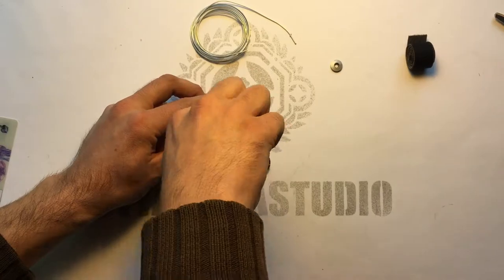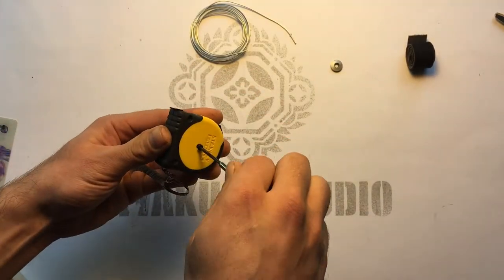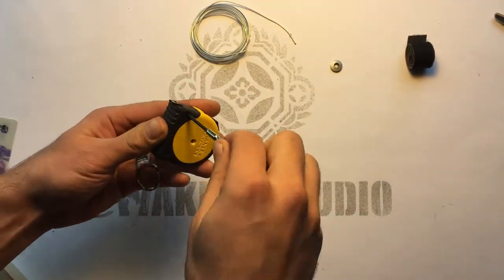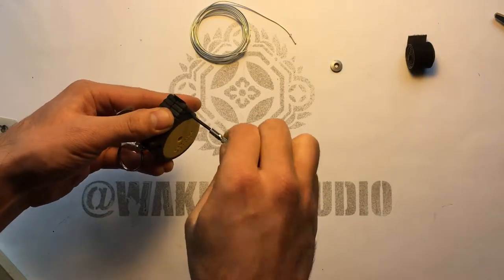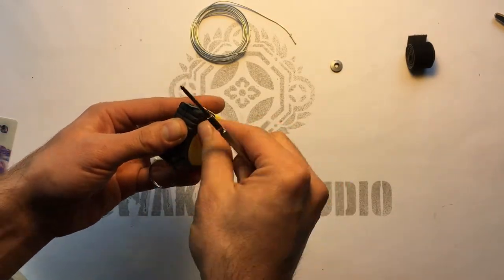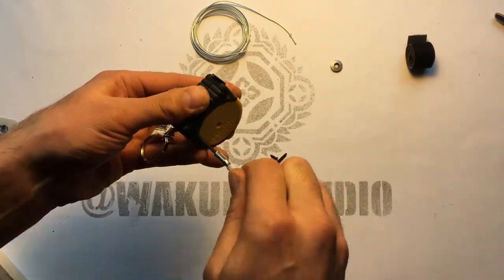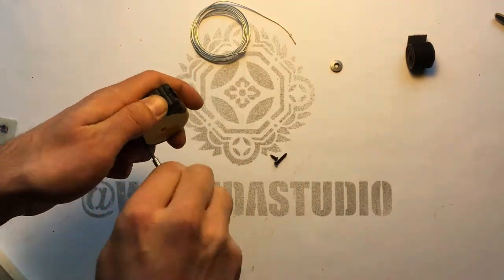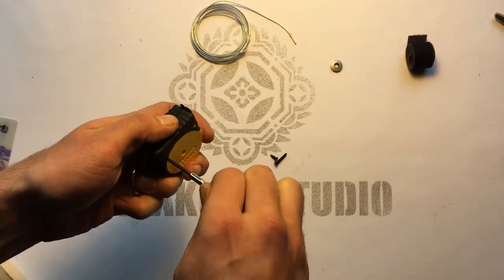Now we'll take out all of the screws from the back of the tape measure. You'll actually notice that because we'll be drilling through the exact center, the center screw hole we won't be putting anything back in there but the other ones we will replace.